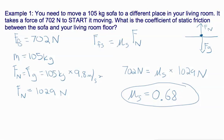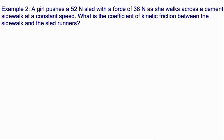So in this example we have a girl pushing a 52 newton sled with a force of 38 newtons as she walks across a cement sidewalk at a constant speed. Now, this constant speed is important. This constant speed tells us that acceleration equals zero, which means that the net force equals zero.